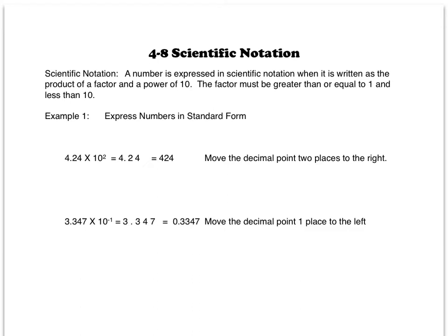In Example 1, we will express numbers in standard form. 4.24 times 10 to the second power equals 424. We get this by moving the decimal point two places to the right. For 3.347 times 10 to the negative first power, you will get 0.3347 by moving the decimal point one place to the left.